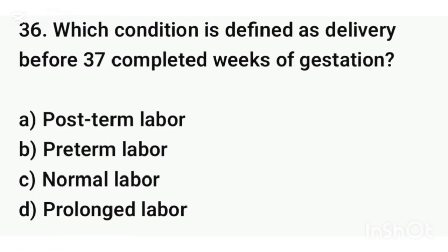Question number thirty-six. Which condition is defined as delivery before 37 completed weeks of gestation? The correct answer is option B: Pre-term labor.